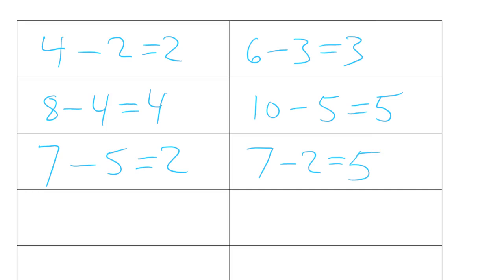I don't have to write two sentences for the doubles ones, because if I write ten minus five equals five and switch those two numbers, it's going to look exactly the same — it's still ten minus five equals five. So that's why.